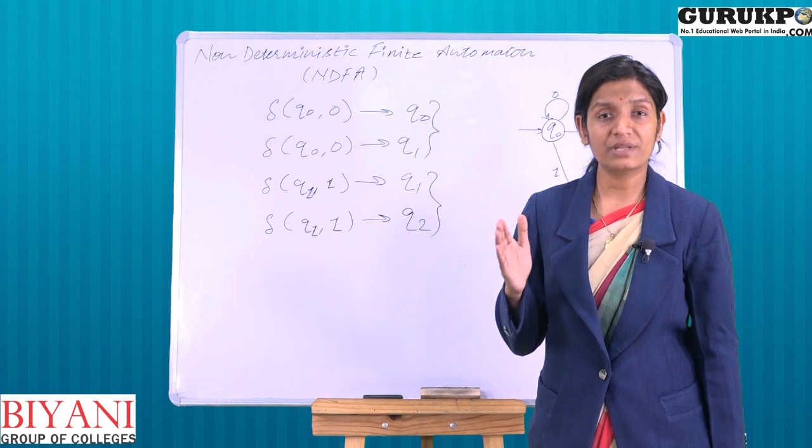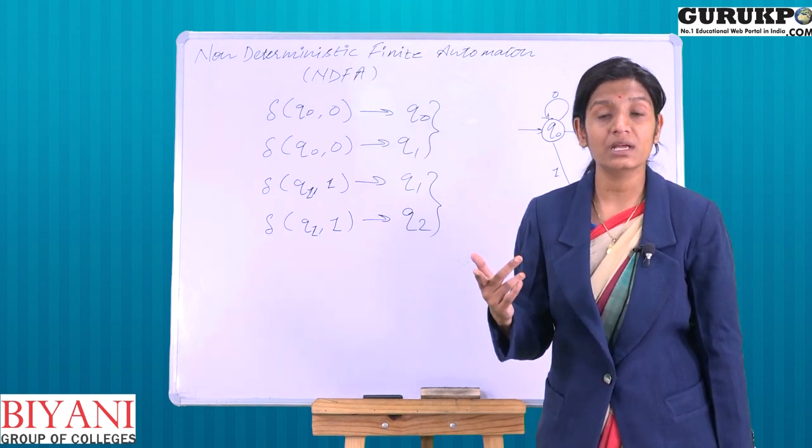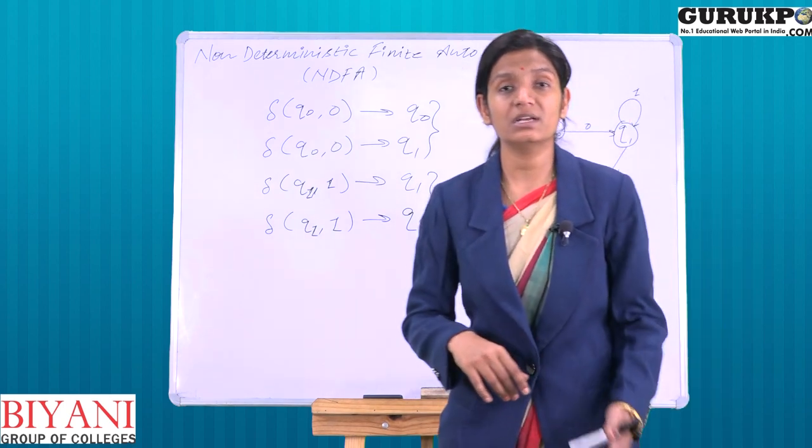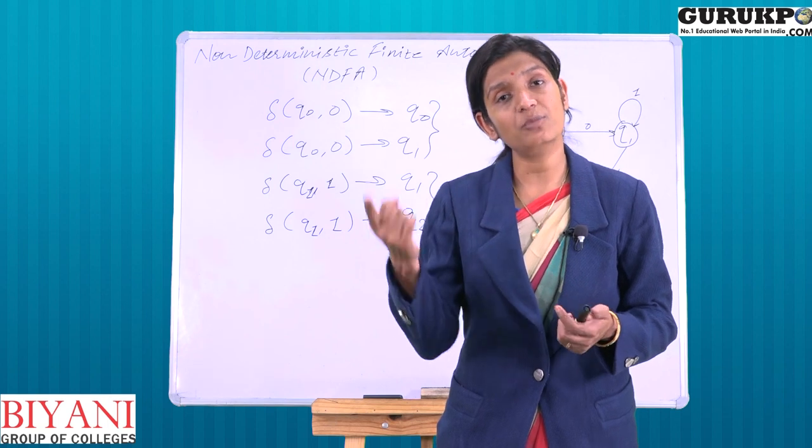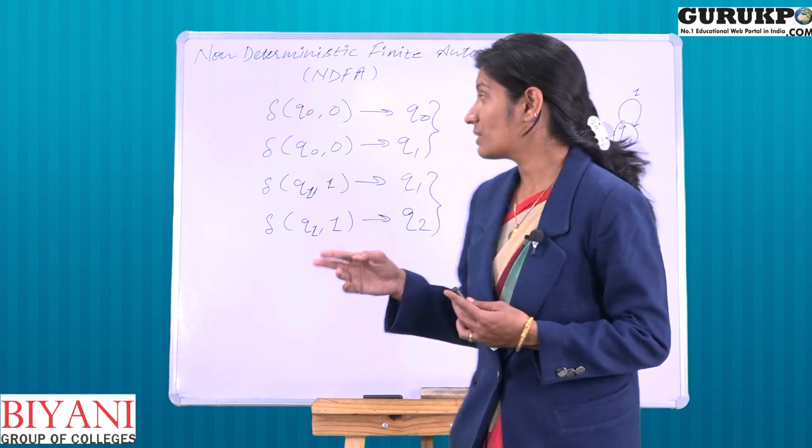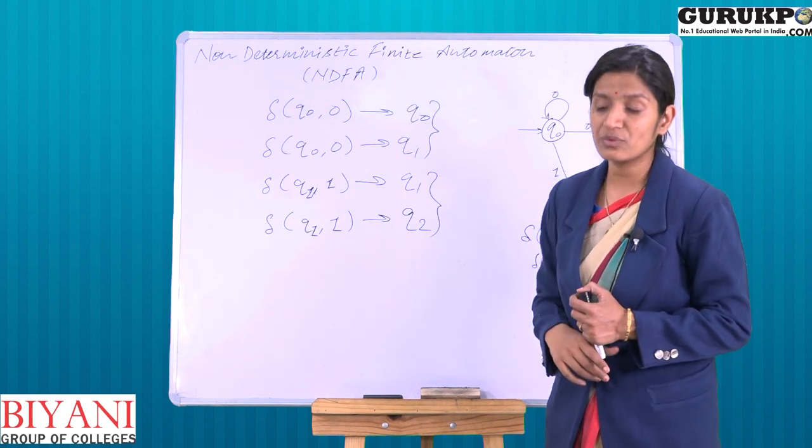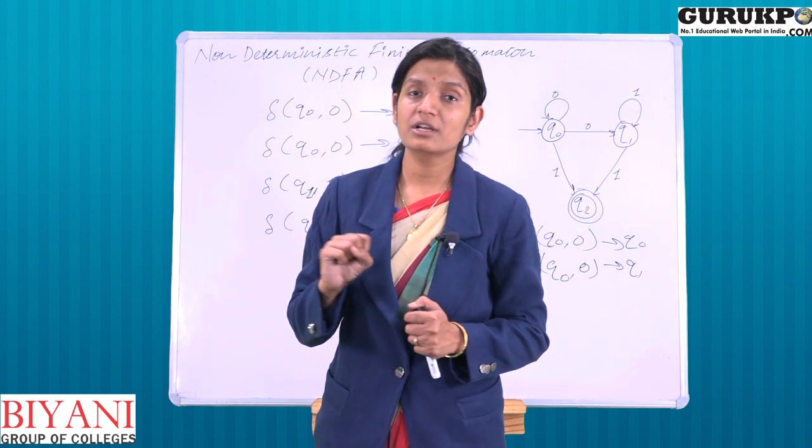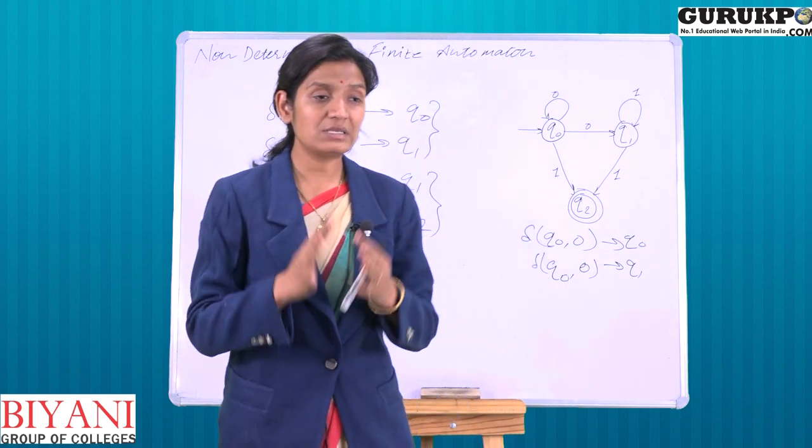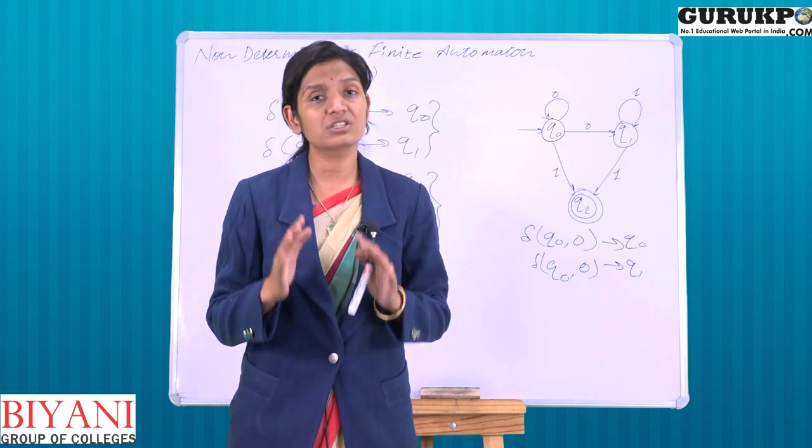This is called non-deterministic because this behavior is not deterministic. In deterministic automata we have seen that if we put one input in one state then we have only one possible next state, but here we are getting multiple next states. So this is the basic difference between deterministic finite automata and non-deterministic finite automata. The difference between DFA and NDFA is only the transition function.